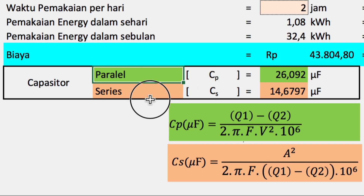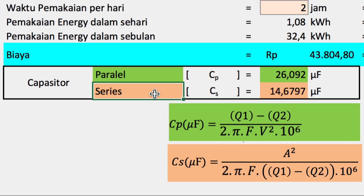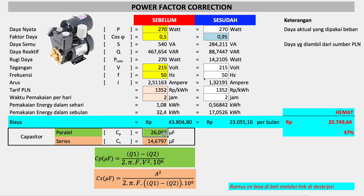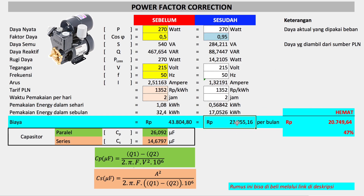Baik itu paralel maupun seri, keduanya bisa berjalan dengan baik. Itu langkah-langkah penghitungan penentuan mikrofarad kapasitor, atau kapasitas kapasitor, untuk memperbaiki faktor daya, sehingga didapatkan penghematan untuk biaya kelistrikan setiap bulannya.